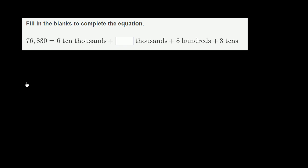So if we write 76,830, I'm going to try to color code it. We could write this out as being the same thing as 70,000 plus 6,000.